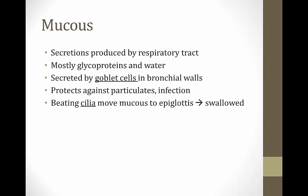Mucus is secretions produced by the respiratory tract — mostly glycoproteins in water — secreted by goblet cells in the walls of the bronchi. The purpose of mucus is to protect against particulates, which collect in the mucus so they don't get further down into the lungs. Mucus also serves as a barrier to infection.